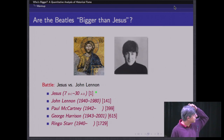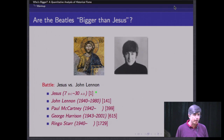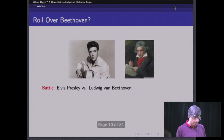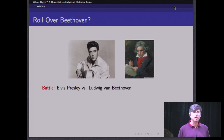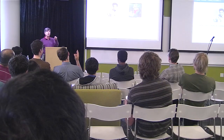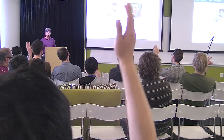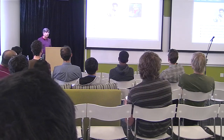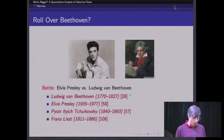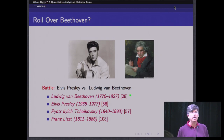All the Beatles are still quite impressive but less significant than Jesus. And if you rank them by significance, they fall in the canonical order of John, Paul, George, Ringo — if any of you are Beatles fans. Who's bigger: Elvis Presley or Ludwig von Beethoven? Turns out Beethoven is ranked historically more significant, although Elvis is actually quite high on the order with Tchaikovsky and substantially ahead of Franz Liszt by our measurement.